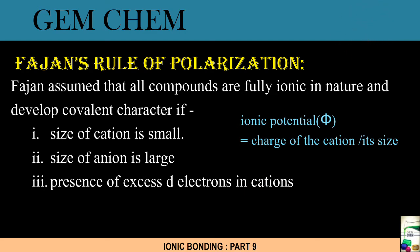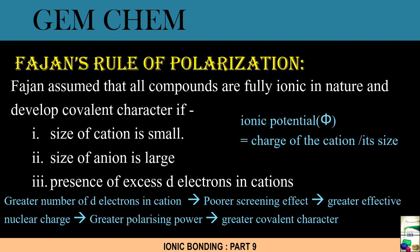So as a result of d electrons there will be poorer screening effect resulting in greater effective nuclear charge. And since there is a greater effective nuclear charge over cation, greater will be its polarizing power, and hence the corresponding compounds will have greater covalent character. Its greater number of d electrons in cation, poorer screening effect will occur and greater effective nuclear charge. As a result there will be greater polarizing power. More the polarizing power, more the covalent character.